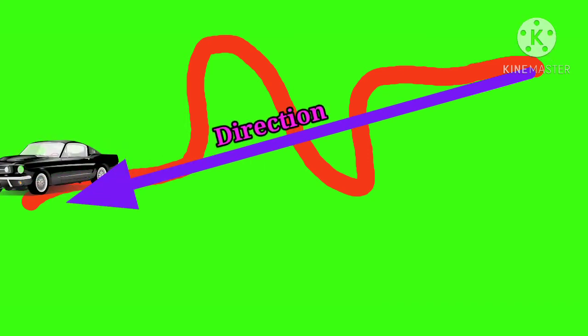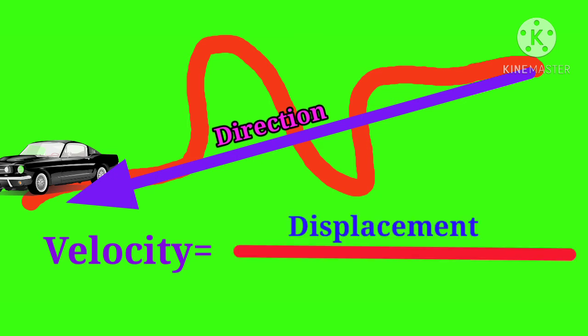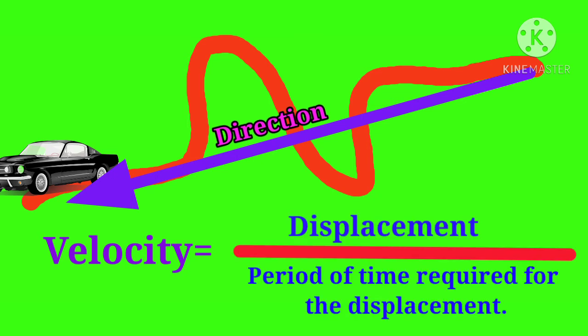Velocity: Velocity is the distance traversed by a body in a specific direction in unit time. The velocity of a body can be calculated by the following formula: Velocity = Displacement / Period of time required for the displacement.